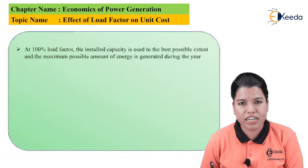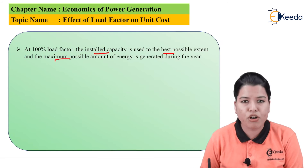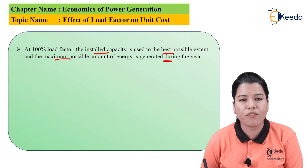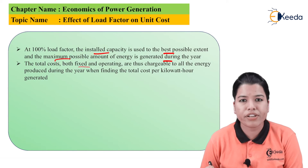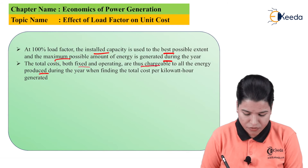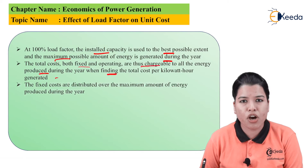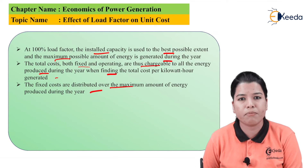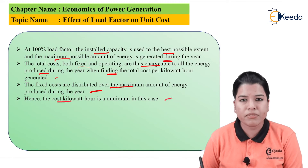Now if we consider a 100% load factor, then the installed capacity is used to the best possible extent and the maximum possible amount of energy is generated during the year. So when the load factor is 100%, the operation of the power plant is considered to be optimal. The total cost, that is both fixed cost as well as operating cost, are thus chargeable to all the energy produced during the year when finding the total cost per kilowatt-hour generated. Now the fixed cost gets distributed over the maximum amount of energy produced during the particular year, therefore the cost per kilowatt-hour is minimum in this particular case.